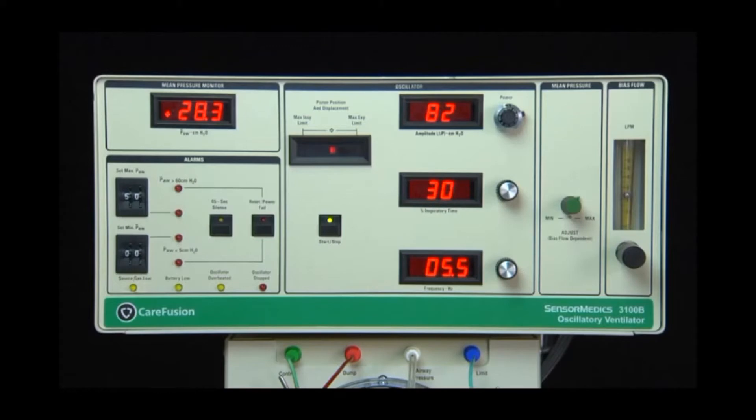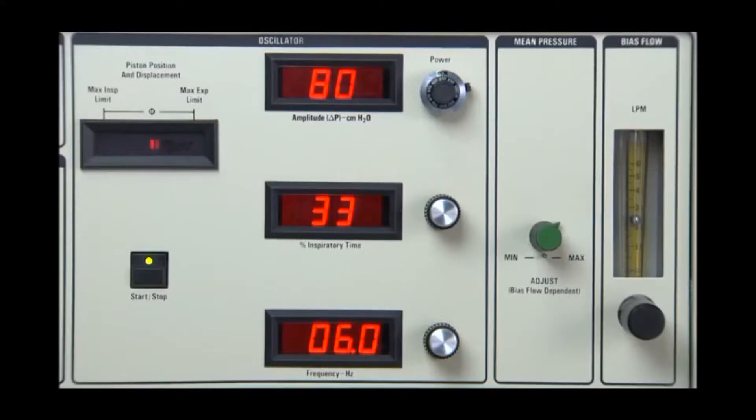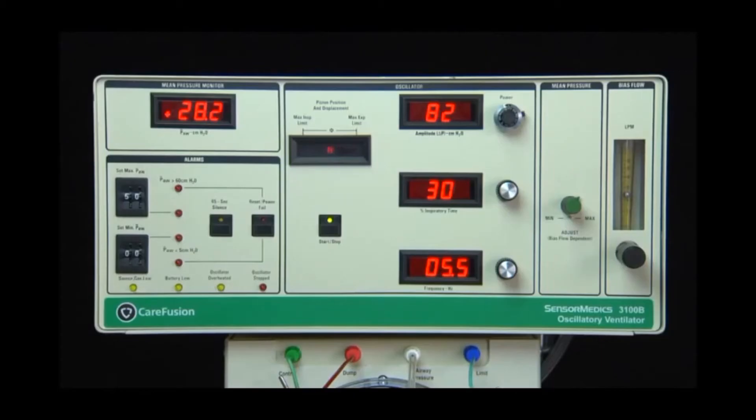In this case, chest wall movement will either be diminished or completely absent. The Piston Position and Displacement Indicator provides the operator with information on the position of the piston relative to its mechanical limits and the control settings. The 3100B features auto-centering and thus requires no intervention by the operator to maintain piston centering.